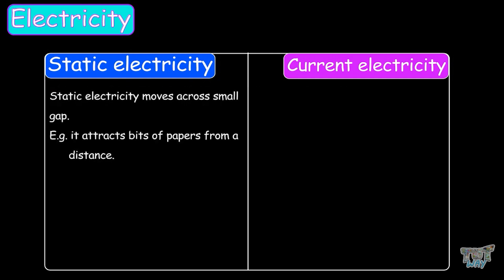Static electricity moves across small gaps. For example, it attracts bits of paper from a distance. Whereas current electricity cannot travel across gaps and needs a wire to travel.